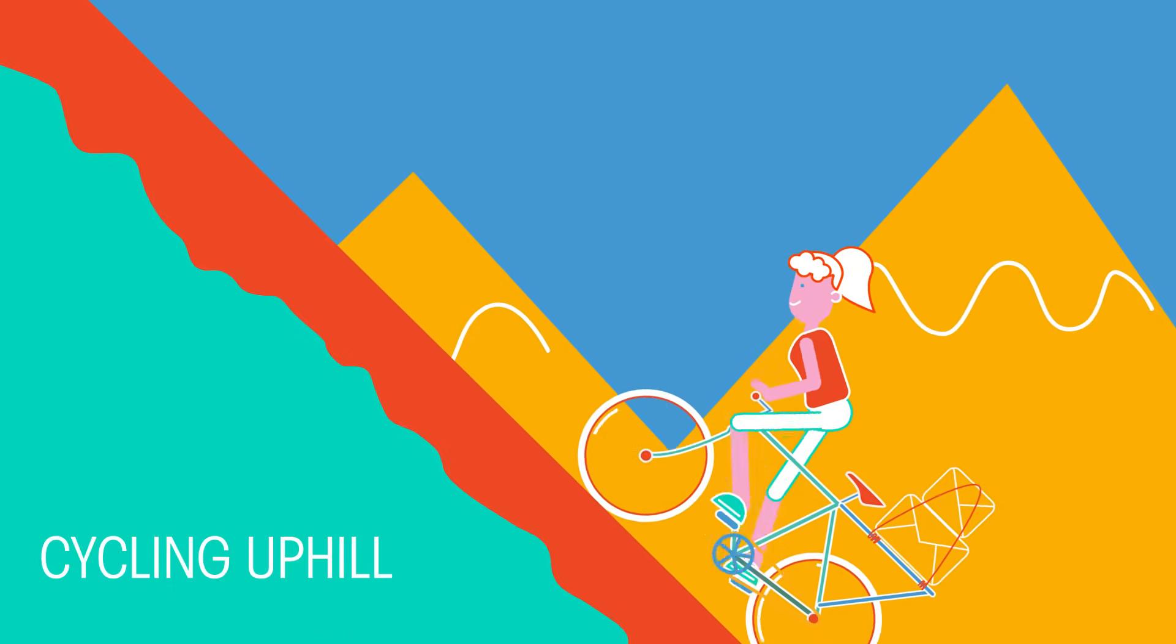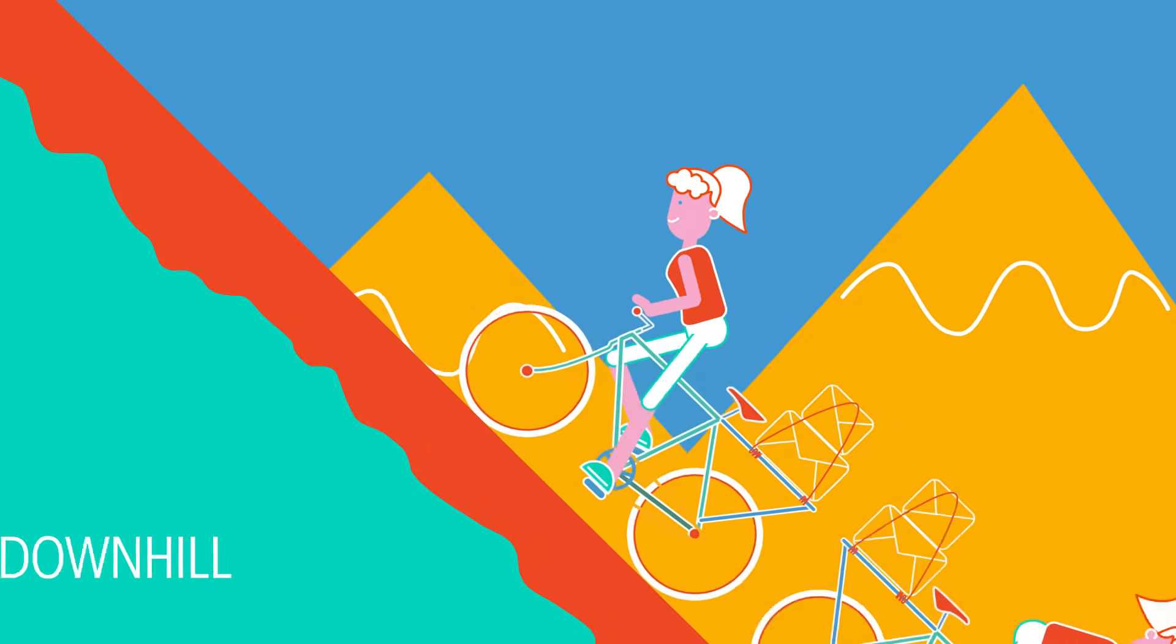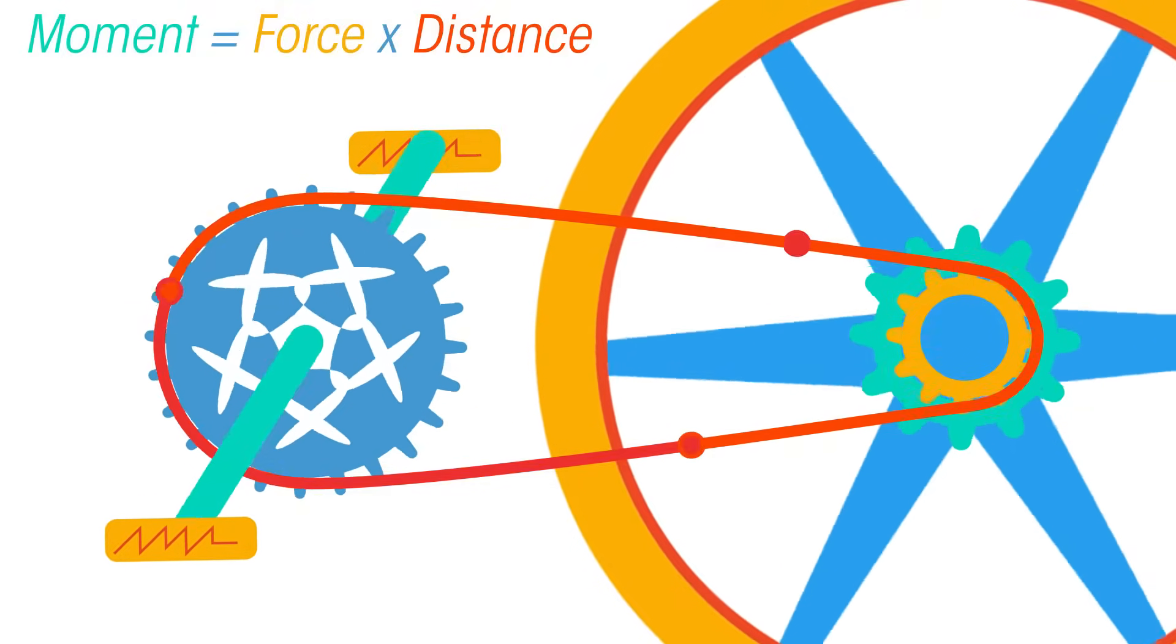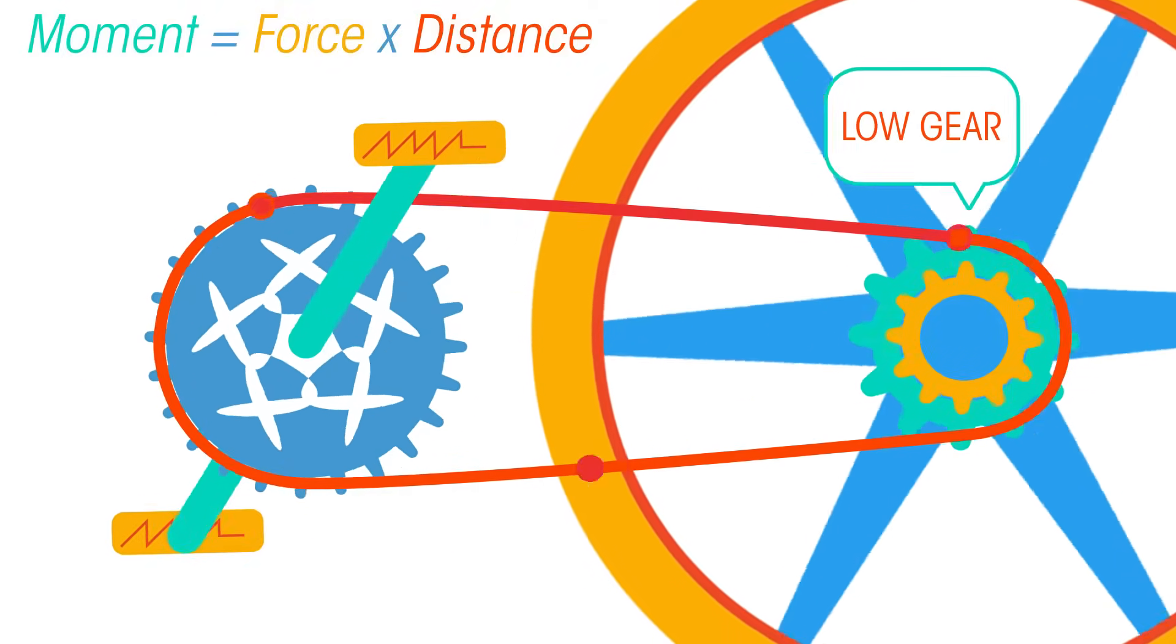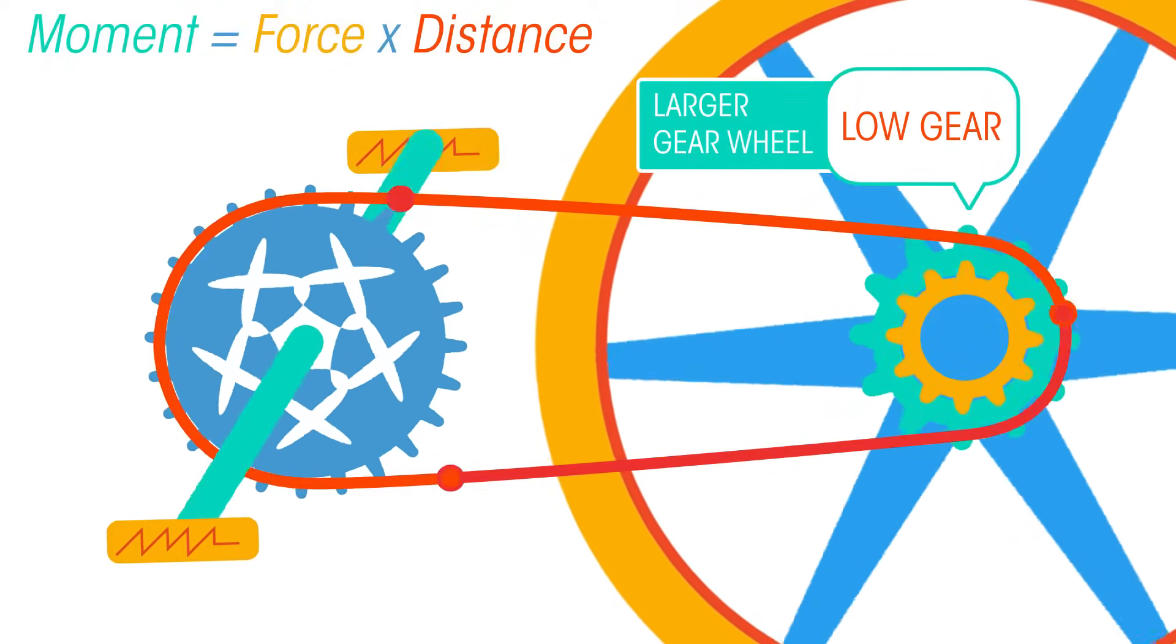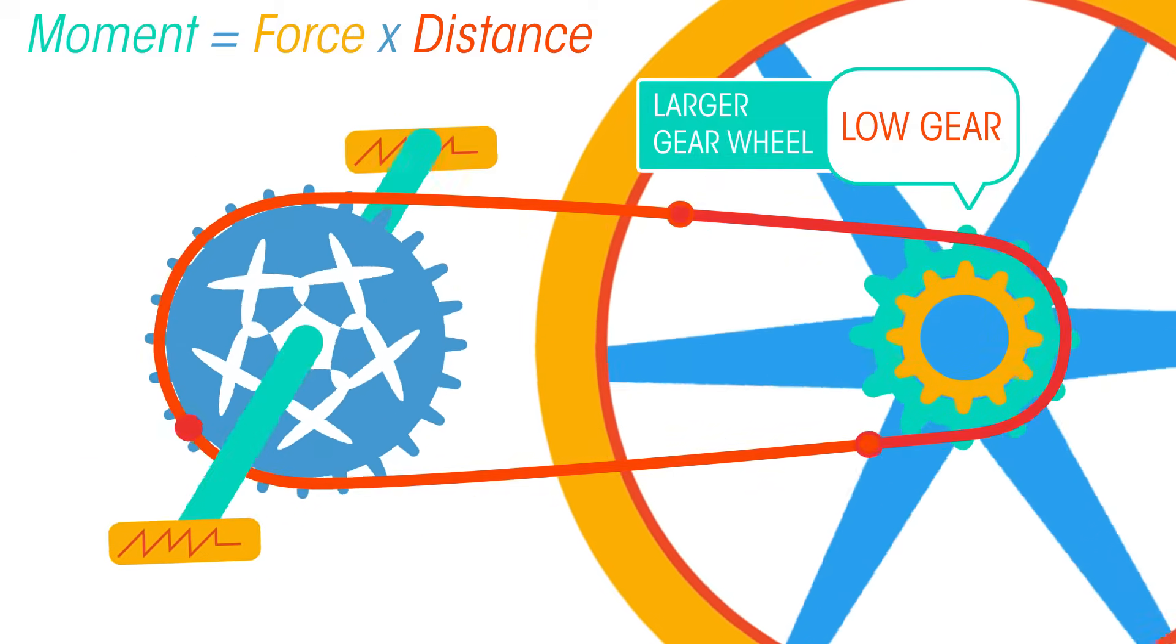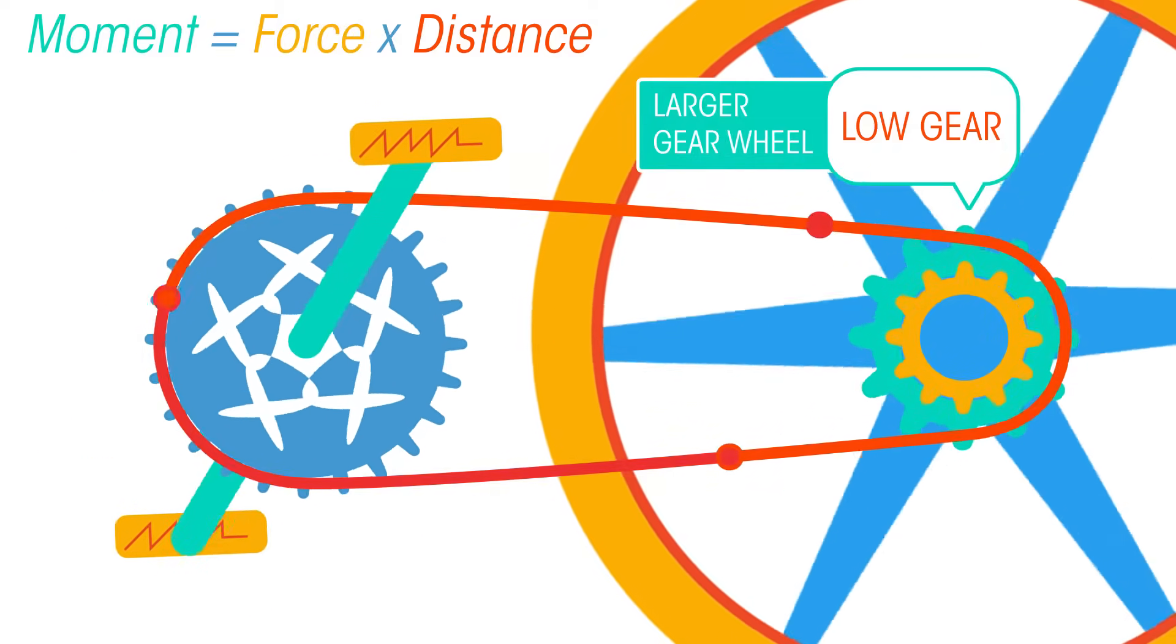This is helpful when cycling or driving up a hill, compared with going downhill and quickly. To cycle uphill, you select a lower gear, which is a larger gear wheel. Therefore, your force exerted on this gear gives a bigger moment, helping you power uphill.